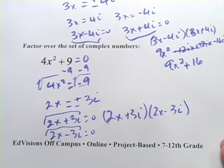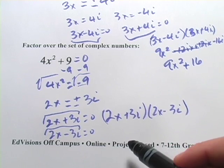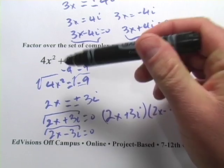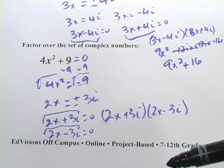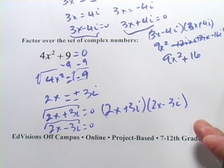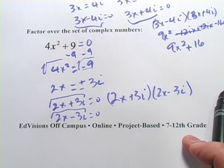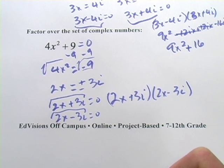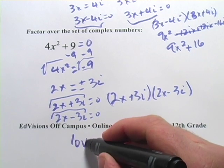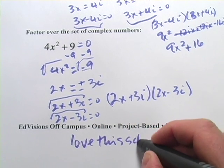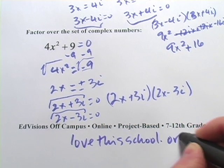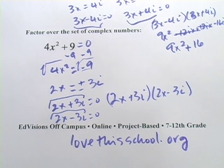And if you want to convince yourself you did it right, FOIL these out — you will absolutely get 4x squared plus 9. So that's how to factor over the set of complex numbers. My name is Larry. I'm a teacher at EdVisions Off Campus — it's an online project-based school in Minnesota. If you're interested, you can check us out at lovethisschool.org. Thanks.